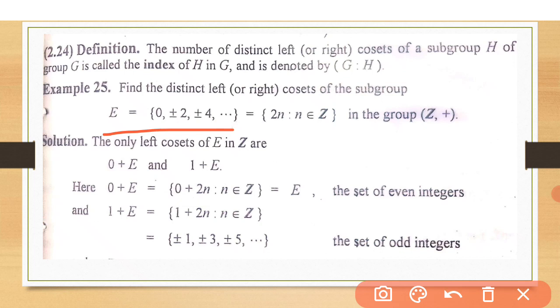Now, first we get the left cosets or right cosets. Then the number of distinct left or right cosets will be the index of H in G. In cosets, we take the elements one by one. First element from Z, and because it is with respect to addition, we add. For example, first element of Z is 0. We add 0 to E.